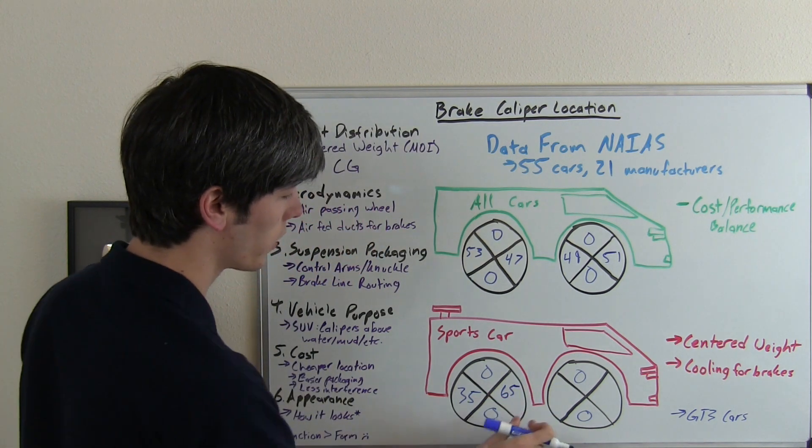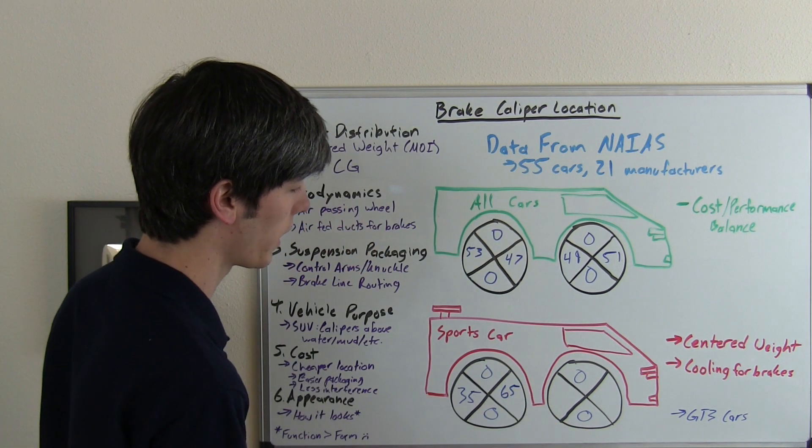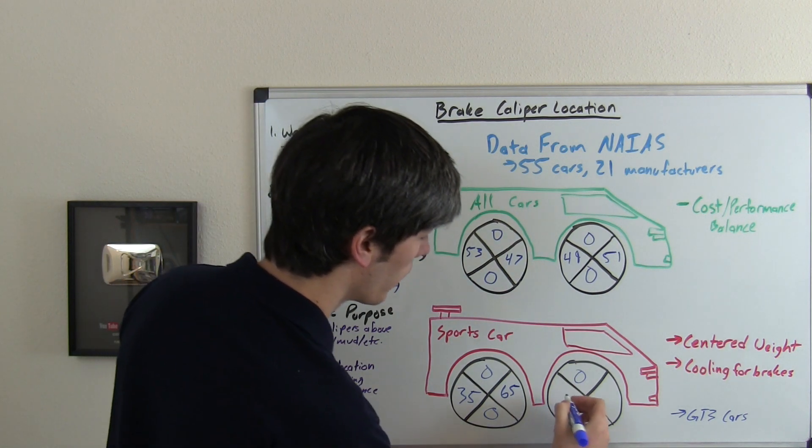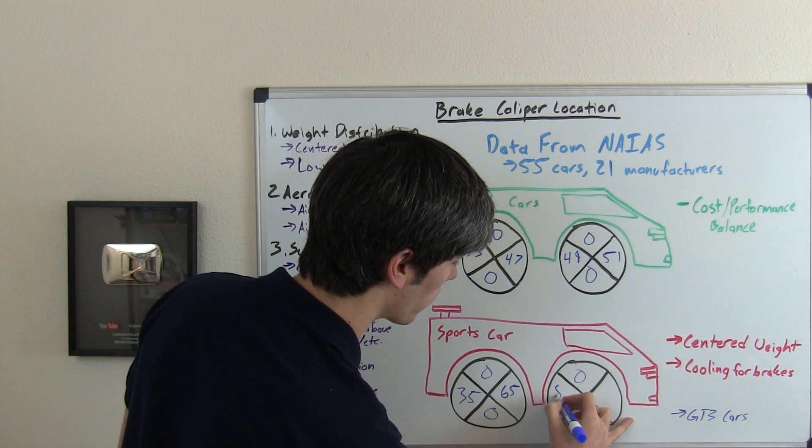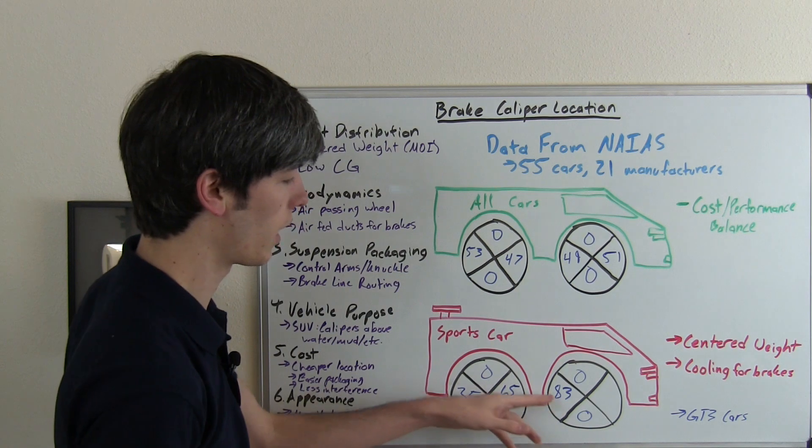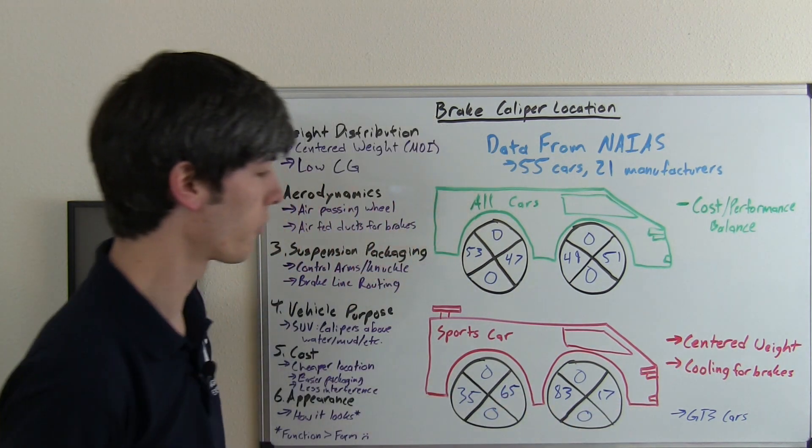Definitely a bias towards the front, towards the inside of the car for the rear brakes. And then for the front brakes, an even heavier bias to be towards the inside. So 83 percent were towards the inside and 17 were up front.